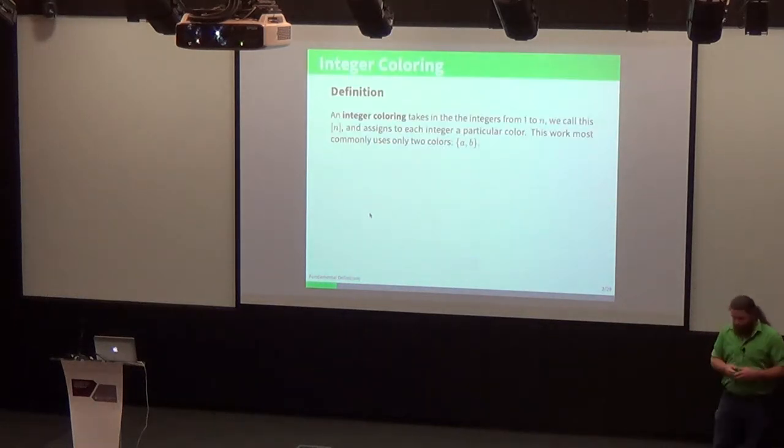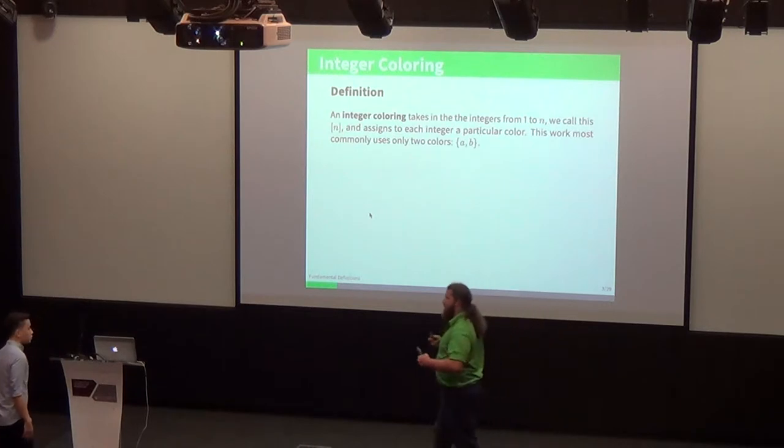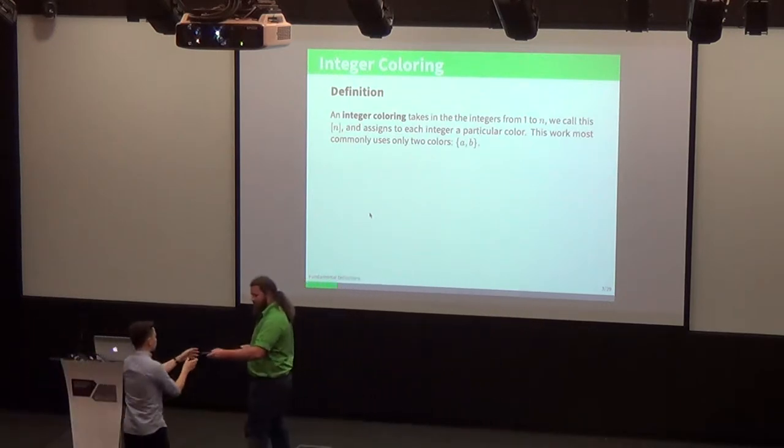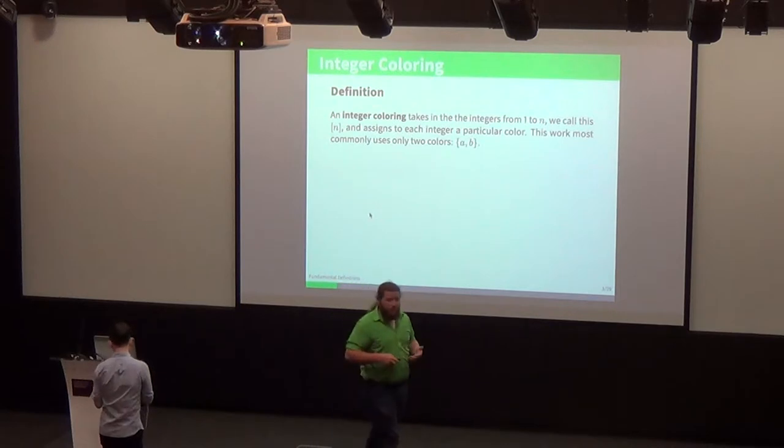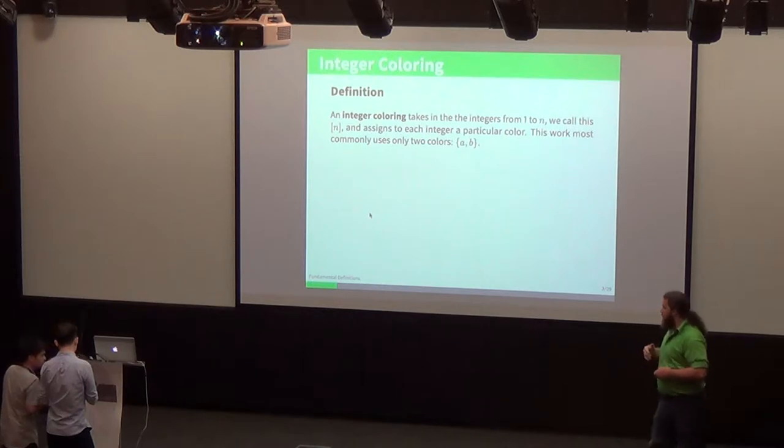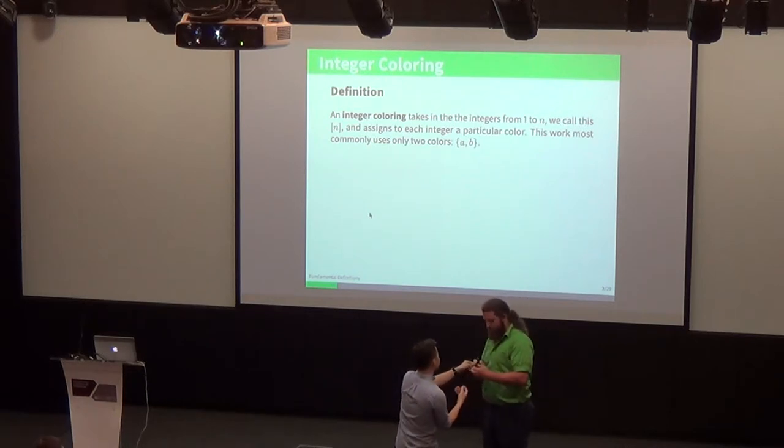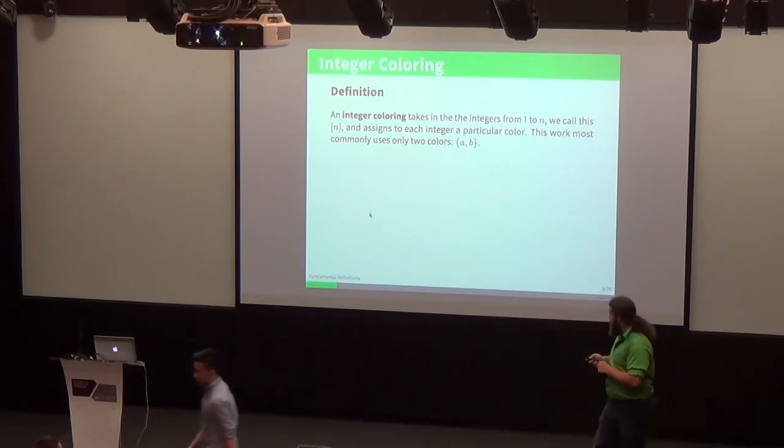Let's start with definitions. They're pretty quick, so we'll get straight into it. The first thing we need to talk about is integer coloring, which just takes the set of integers from 1 to n and assigns to each of them a particular color. This work mostly uses just A and B.